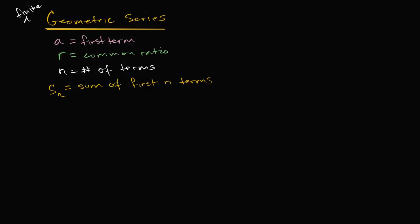So let's write out S sub N just to get a feeling for what it would look like. S sub N is going to be equal to: the first term is A. Then the second term — this is a geometric series — so it's going to be A times the common ratio, so A times R. The third term is going to be the second term times the common ratio again, so AR times R, or AR squared.